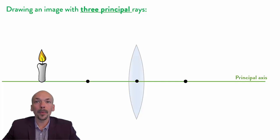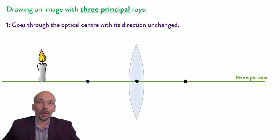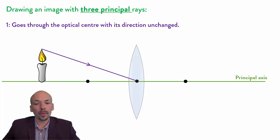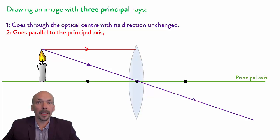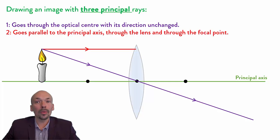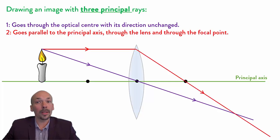Now we can draw the image using three principal rays. The first one goes through the optic center and its direction is unchanged, so it will look like this. The second one will go parallel to the principal axis. It will go through the lens and then through the focus point on the other side.